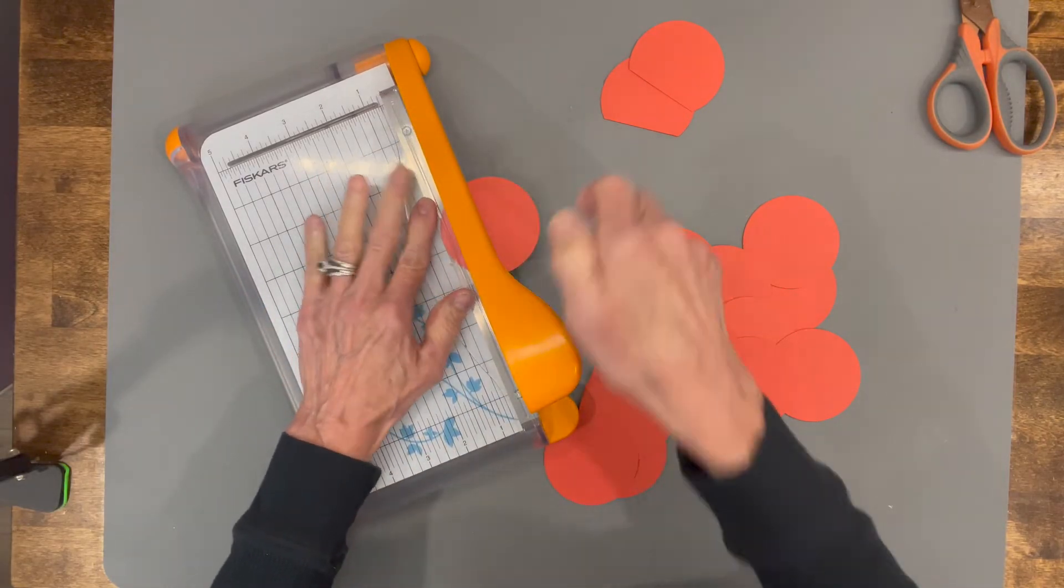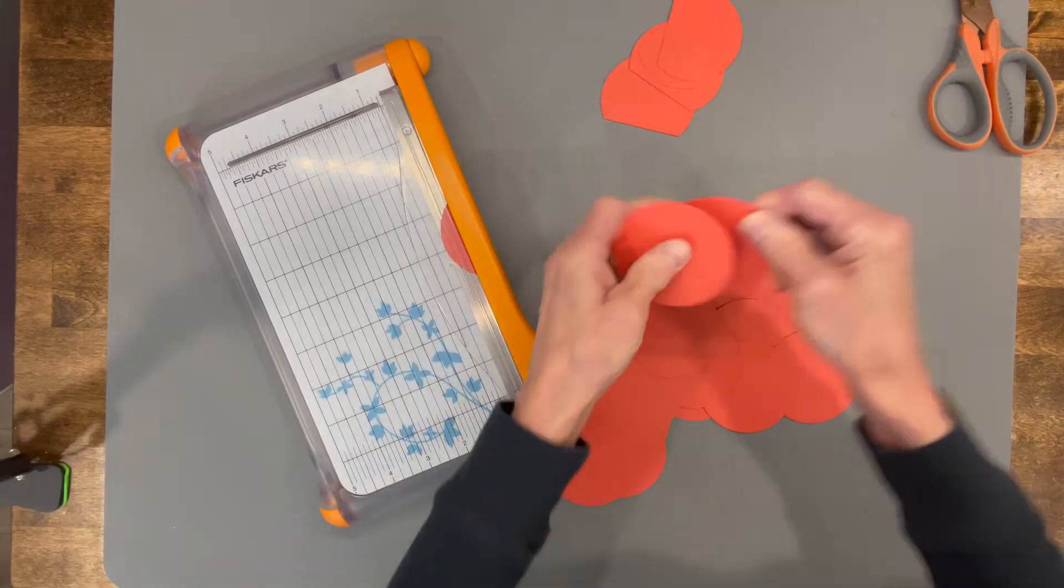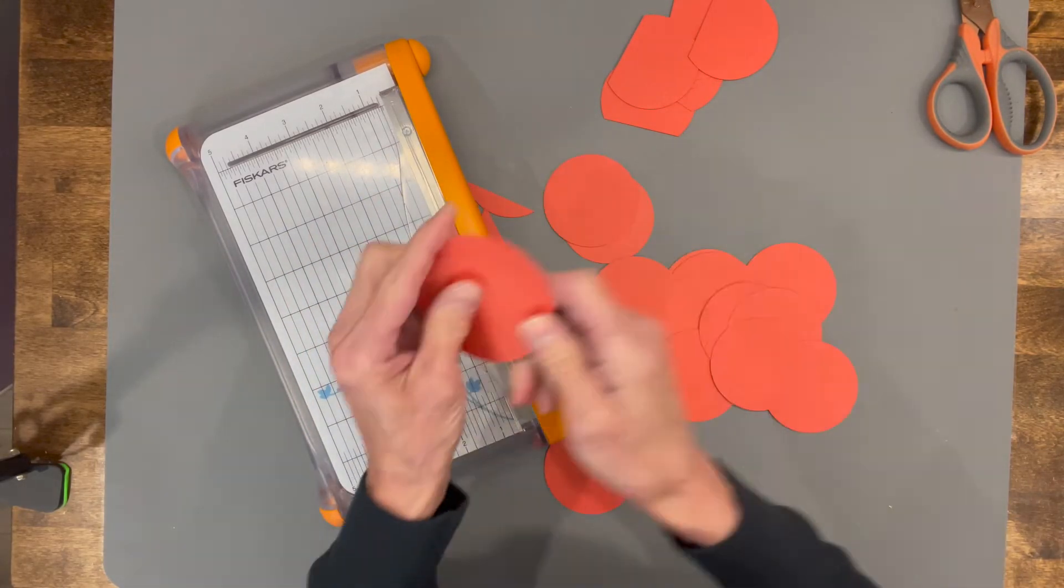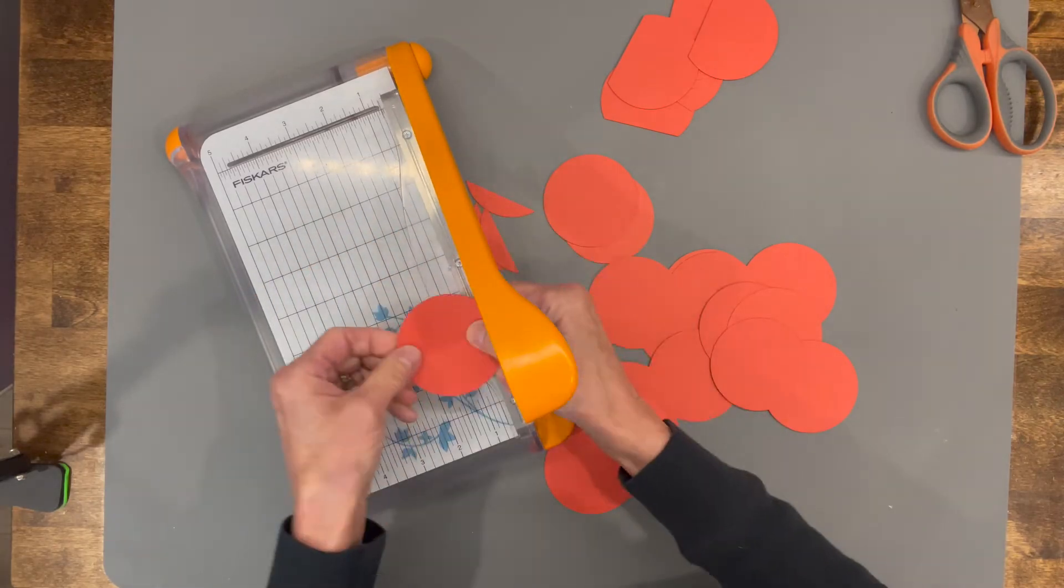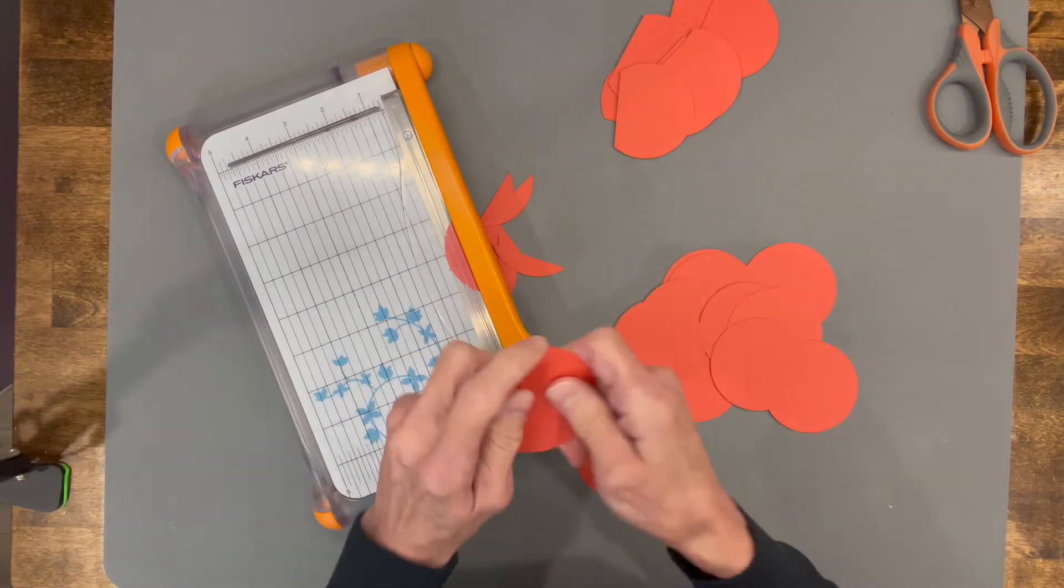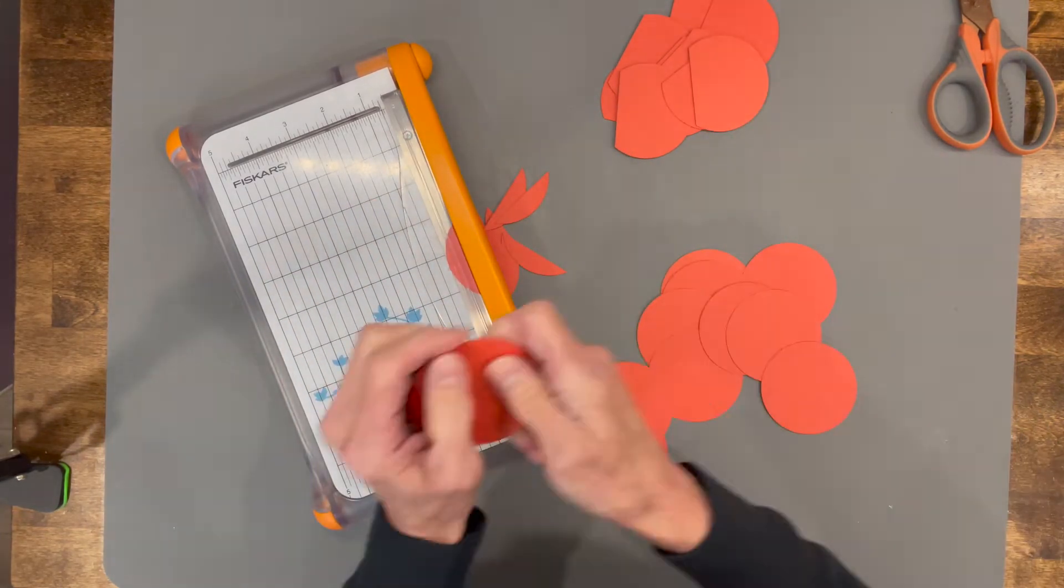Now if you don't have a punch and you have a cutting machine, I've given you the SVG file for that. You can just cut everything out with a Cricut or any other kind of cutting machine that cuts SVG files. If you don't have either, I've also included the PDF. You can cut these out by hand—it's really not that hard.